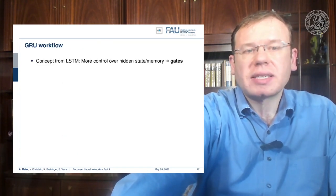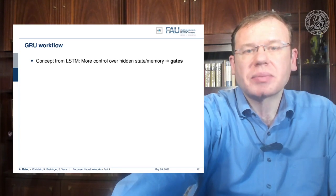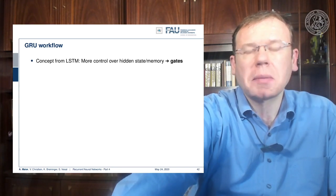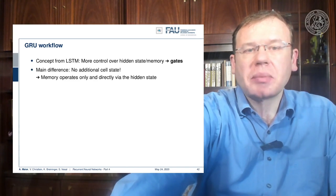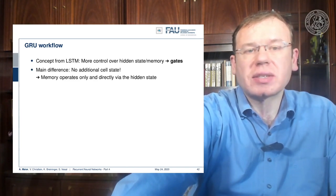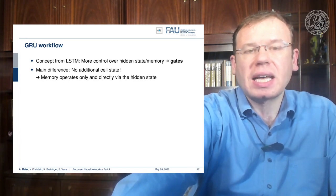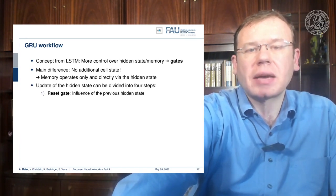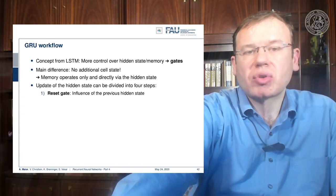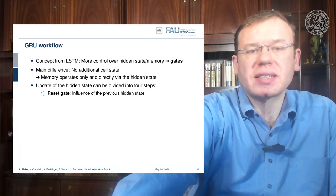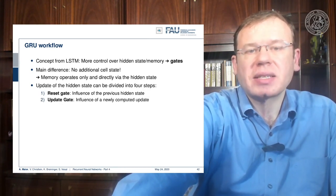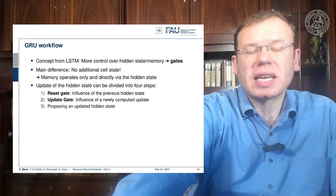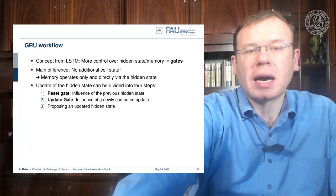The GRU takes concepts from LSTMs and controls the memory by gates. The main difference is there's no additional cell state, so the memory operates directly via the hidden state. The update of the state can be divided into four steps: a reset gate controlling the influence of the previous hidden state, an update gate that introduces newly computed updates, a step that proposes an updated hidden state, and finally the actual update of the hidden state.